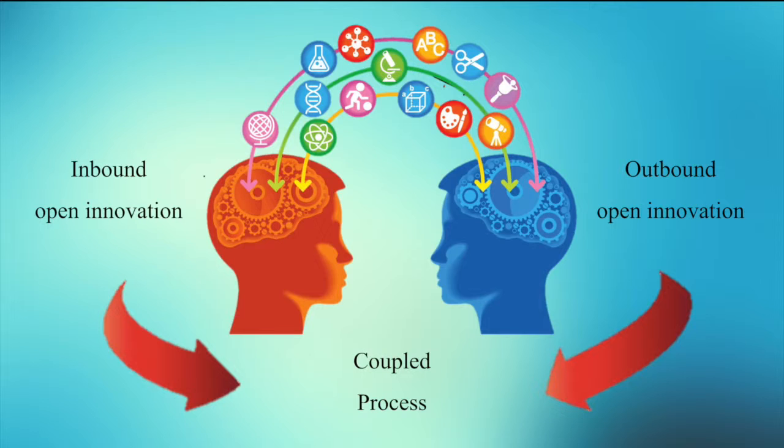However, there is a third form of open innovation called the coupled process. This model exists when companies combine the use of available external resources and knowledge to supplement internal R&D capabilities — inbound activities with outbound ones — which include, for example, using out-licensing so it can co-develop, co-capitalize, and commercialize innovation.